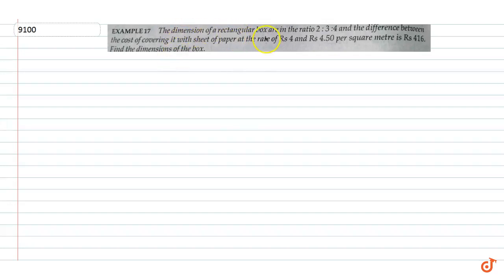In this question, the dimensions of a rectangular box are in the ratio 2:3:4, and the difference between the cost of covering it with a sheet of paper at the rate of rupees 4 and rupees 4.5 per square meter is rupees 416. Find the dimensions of the box. Here we let the dimensions be a = 2x, b = 3x, and c = 4x.